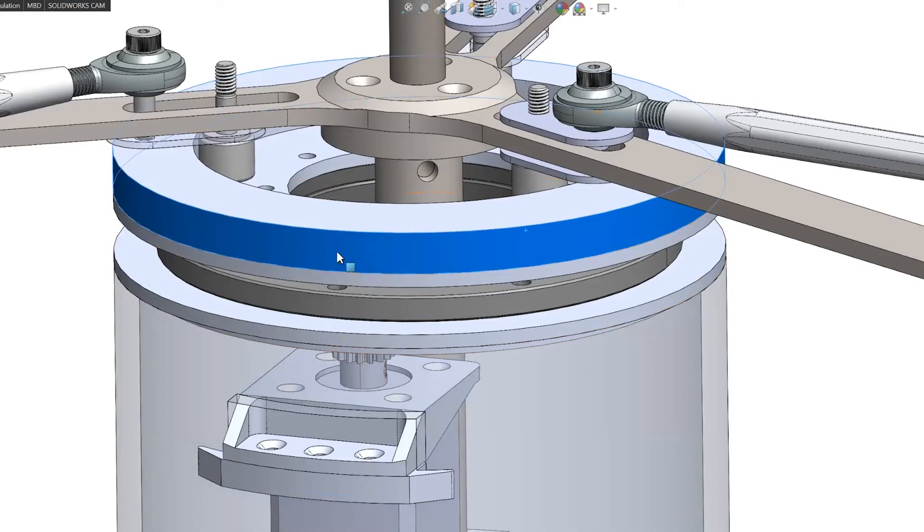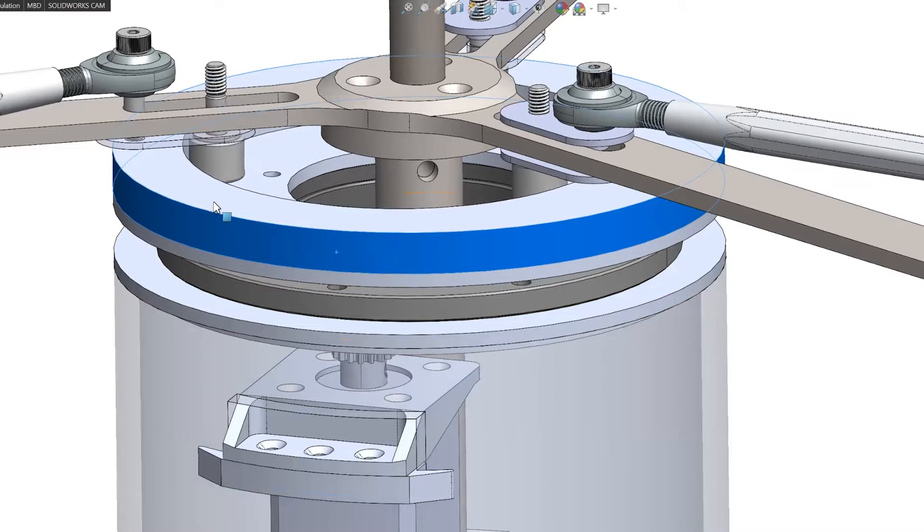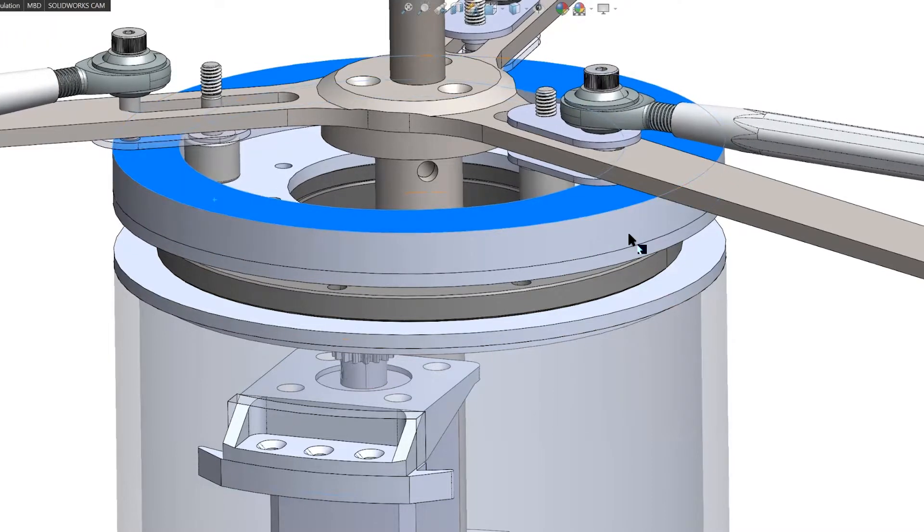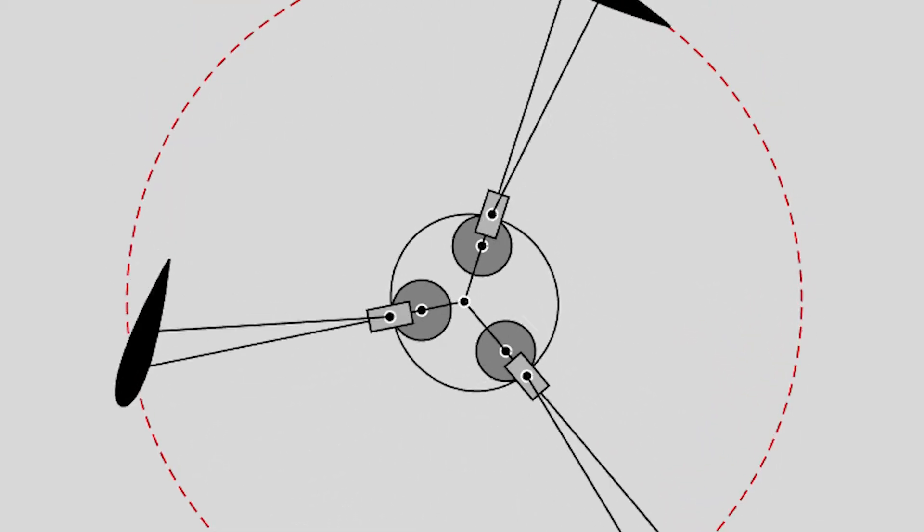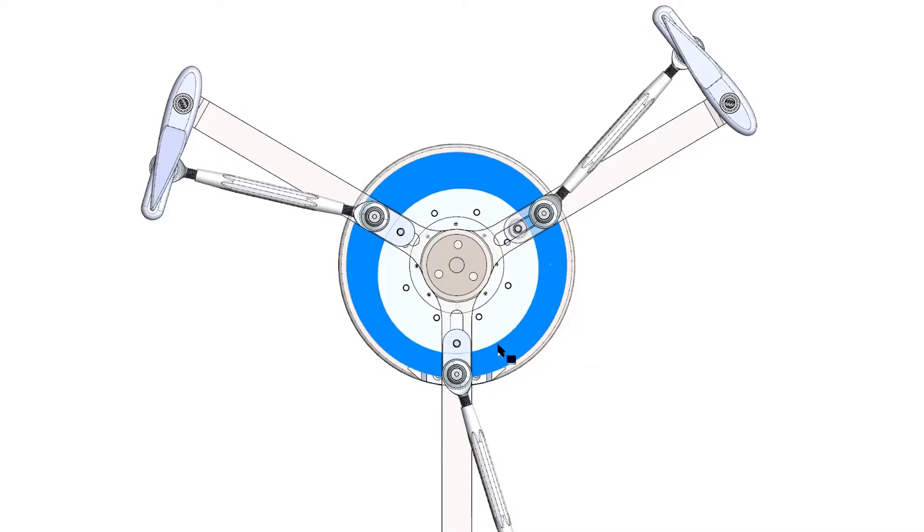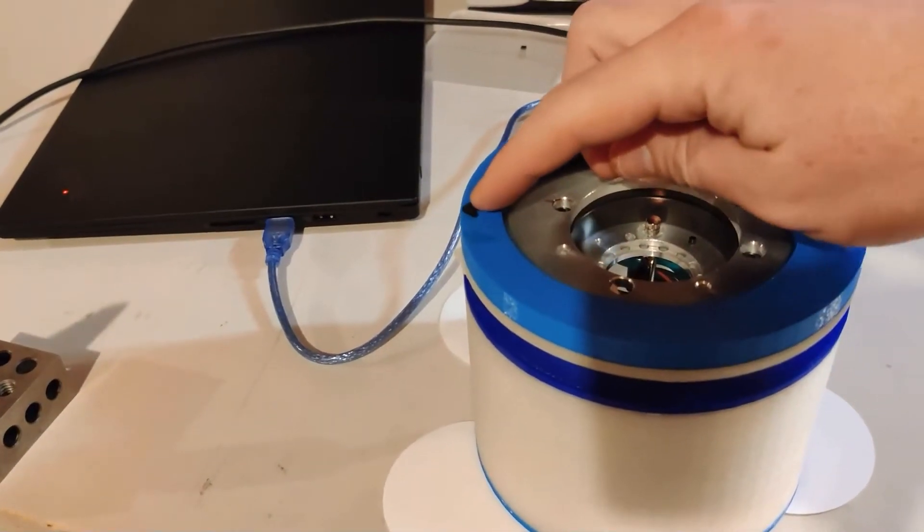The stepper motor will spin the cam to adjust for wind direction. This cam controls the pitch of the airfoils, and the arrow needs to be pointing into the wind direction.